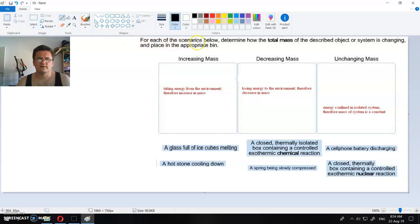For each of the scenarios below, determine how the total mass of the described object or system is changing and place in the appropriate bin. We have six of those situations here, scenarios, and we need to place them inside of each of these bins.